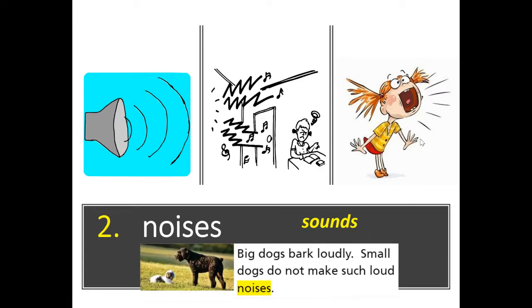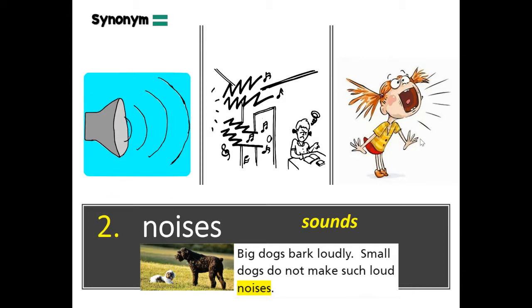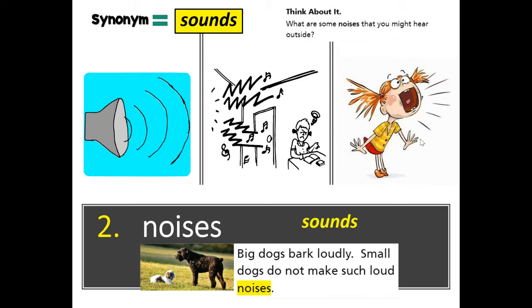Here is 'noises' in a sentence: 'Big dogs bark loudly. Small dogs do not make such loud noises.' A synonym — a word that means the same as 'noises' — is 'sounds': s-o-u-n-d-s. So number two is 'noises,' and a synonym for noises is 'sounds.' Put that in the second column. Think about it: what are some noises that you might hear outside? If I'm going too fast, push pause, and when you're done push play.